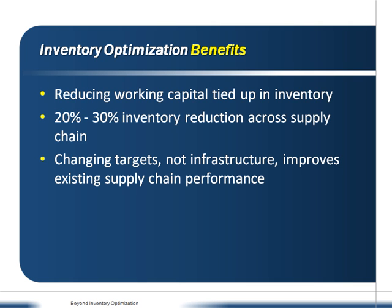You can essentially bolt it on top and pull 10–15% of your inventory out with no fuss. You have certain operating behaviors and lead times in your supply chain — we can characterize them because you're already running your system to those today. You just update your inventory targets and move on. That's clearly the number one benefit, and then you get all sorts of incremental benefits on top of that.